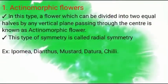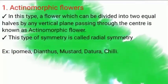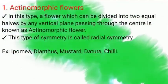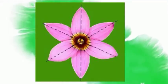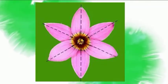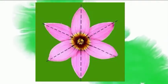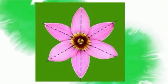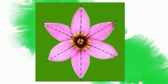In actinomorphic flowers, we can divide the flower into two equal parts in any vertical plane passing through the center. Please check the diagram carefully for better understanding — the diagrammatic representation of an actinomorphic flower shows radial symmetry.